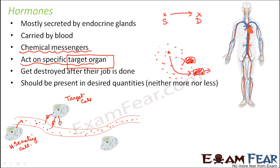The job of a hormone is to carry information from the source to the destination — the target cell — and they recognize their destination with the help of receptors. Hormones are generally produced in very small quantities, that is, in trace amounts. It is very important that they are present in the right quantity — neither more nor less — because over-secretion of any hormone can cause various disorders. Similarly, secretion of any hormone in less than the desired amount can also cause several disorders. When we talk about the different types of hormones in the human body, we will see how over- or under-secretion of hormones can harm our body.